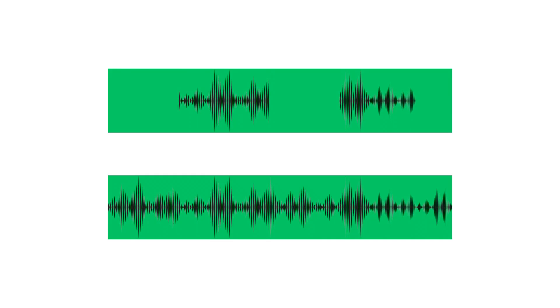What is side-chaining? Let's say we have two audio tracks — for simplicity's sake, we'll call them track A and track B. Let's say we want to put a plug-in on track B. It can be any kind of plug-in — a compressor, a dynamic EQ, a de-esser, whatever. The main point is we only want that plug-in doing its thing when there's audio present on track A.